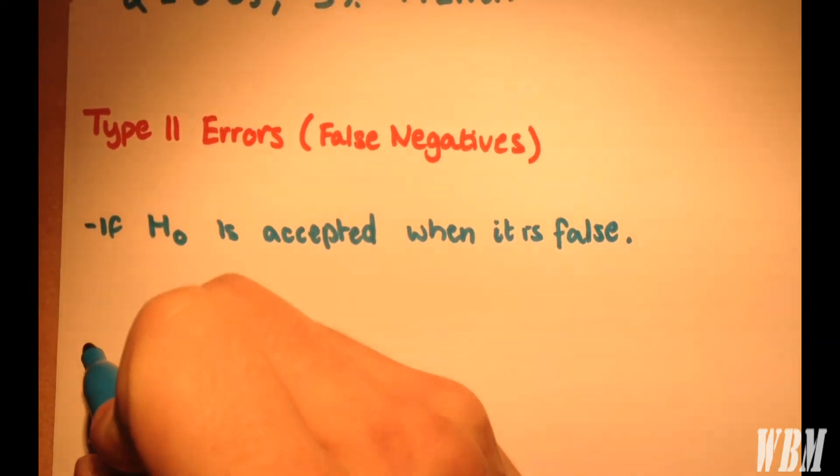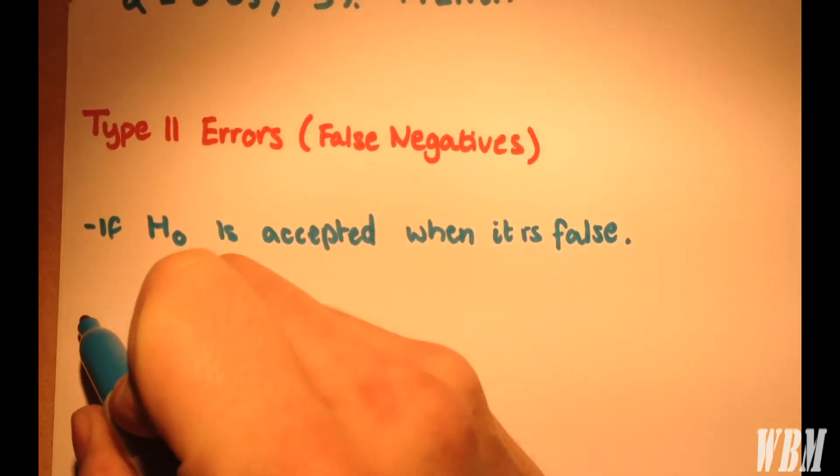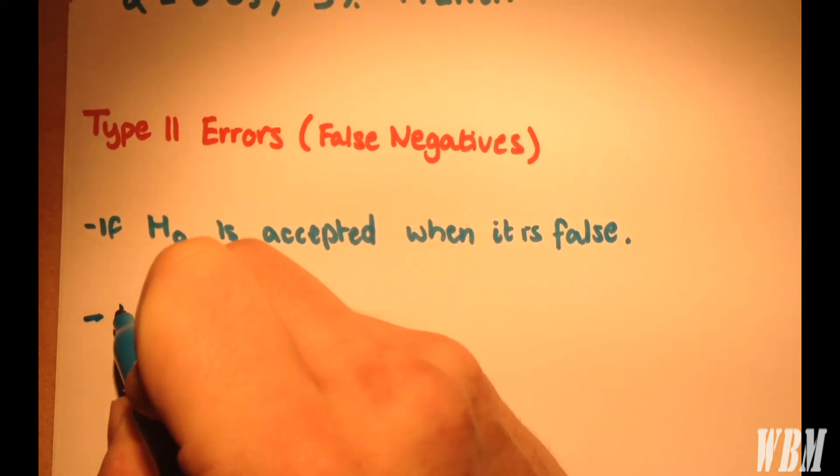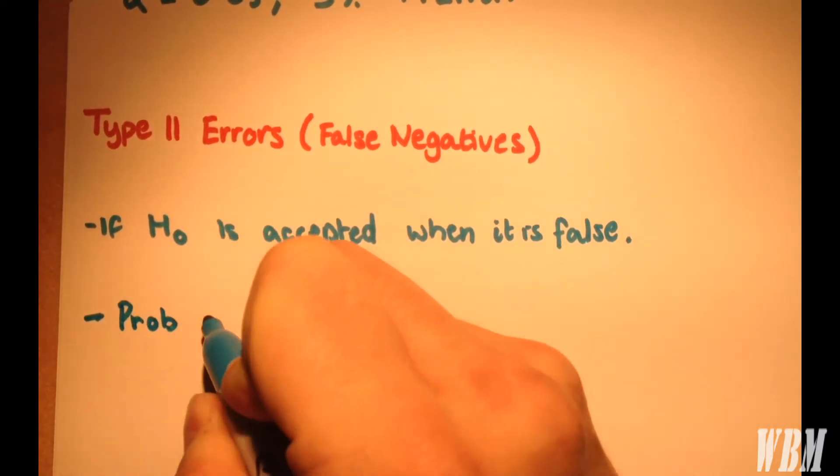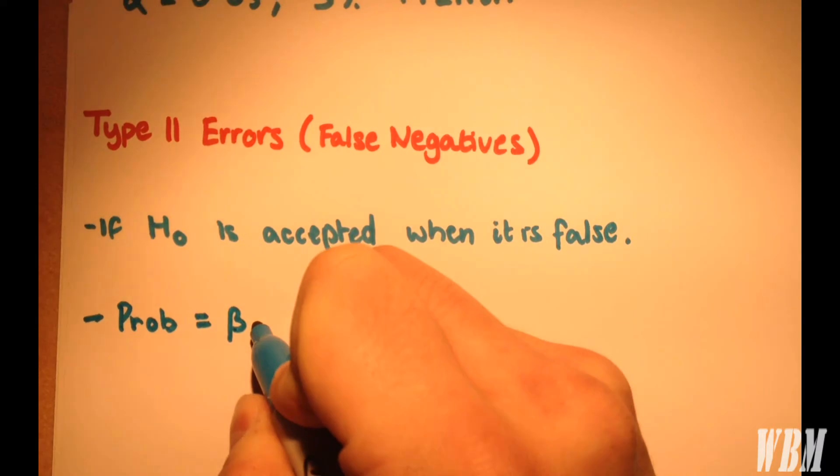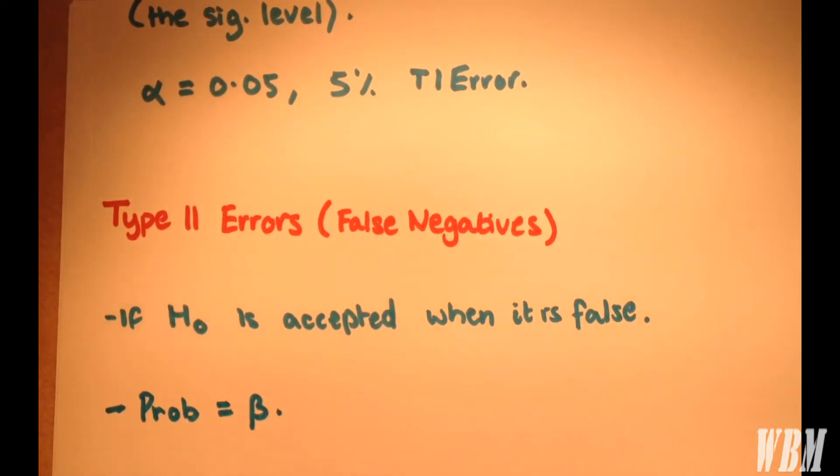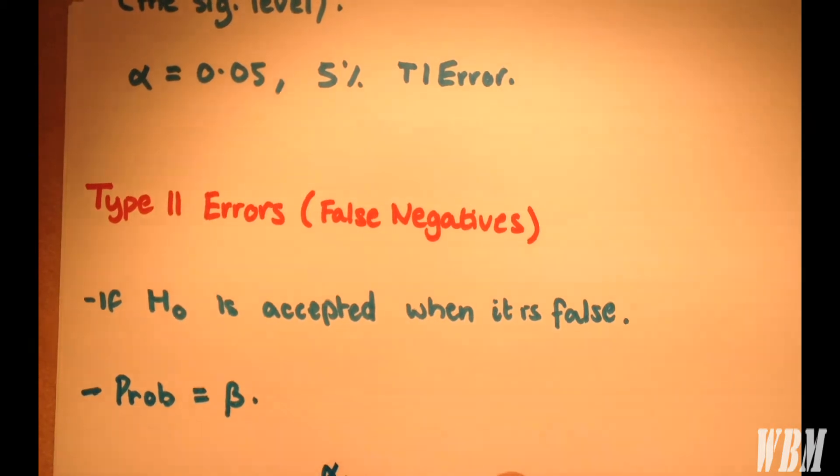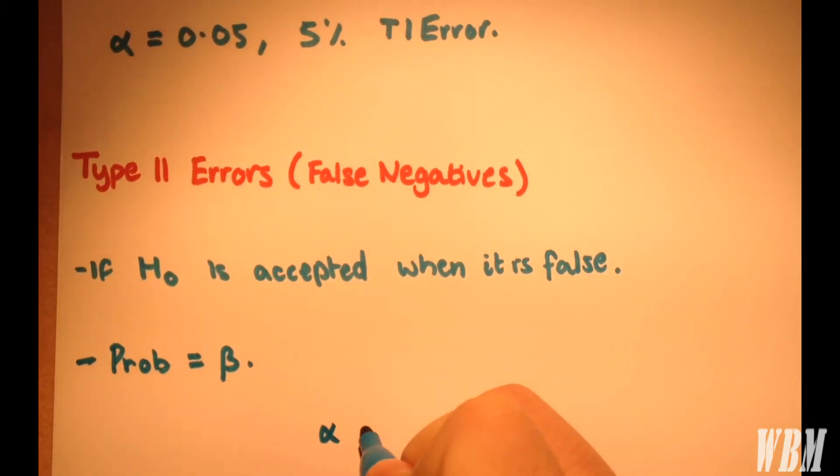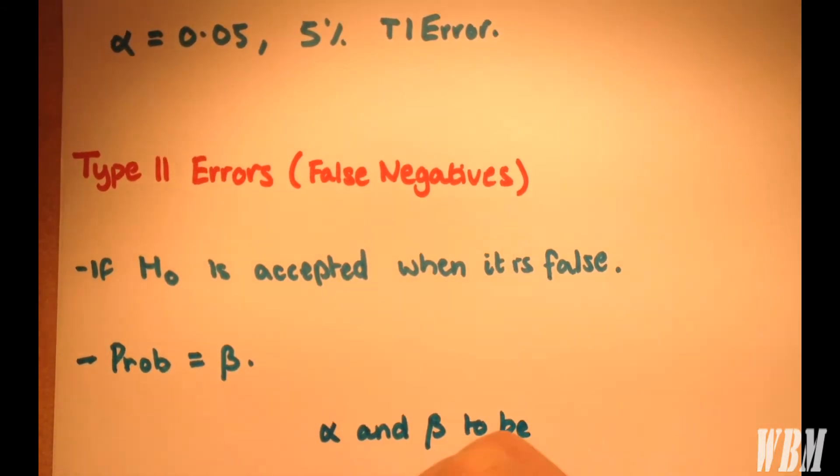The probability of a Type 2 error we refer to as beta. So naturally, the aim when conducting hypothesis tests is for both alpha and beta to be as small as feasibly possible.